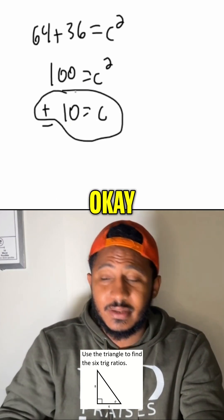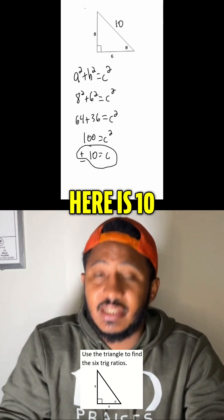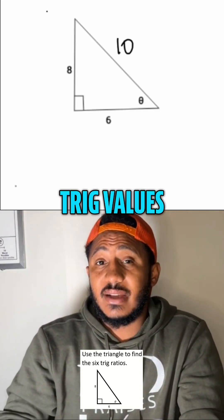All positive vibes. So, we know the hypotenuse here is 10. So, the question here is just find the six trig values. Got it.